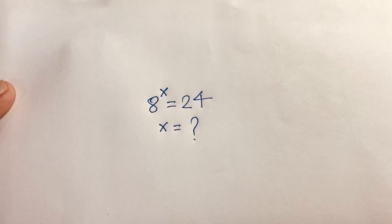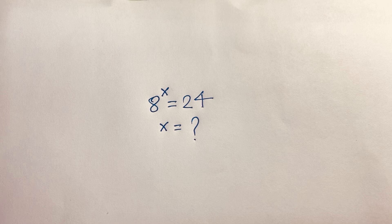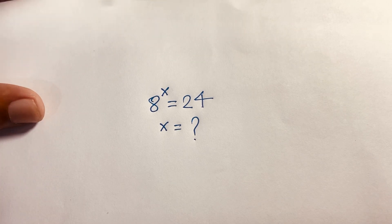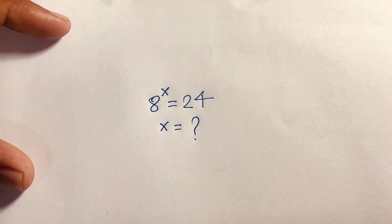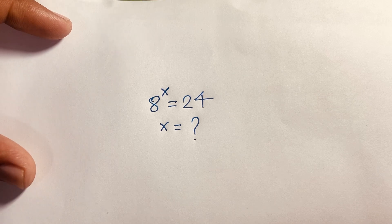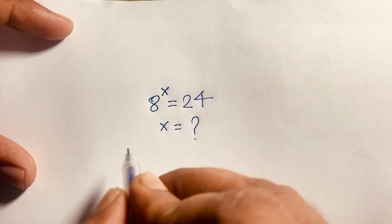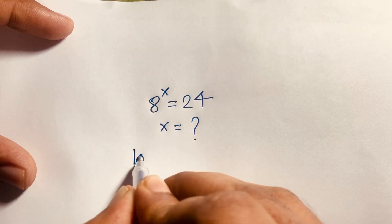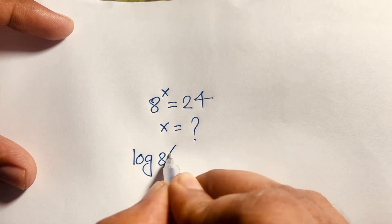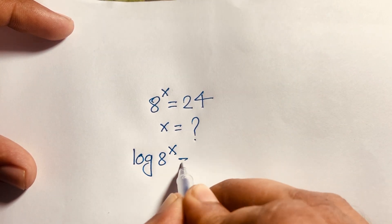Hello everyone. In this video we solve the exponential equation: 8 to the power x is equal to 24. To solve this, we apply the natural log to both sides, so it becomes log(8^x) is equal to log(24).